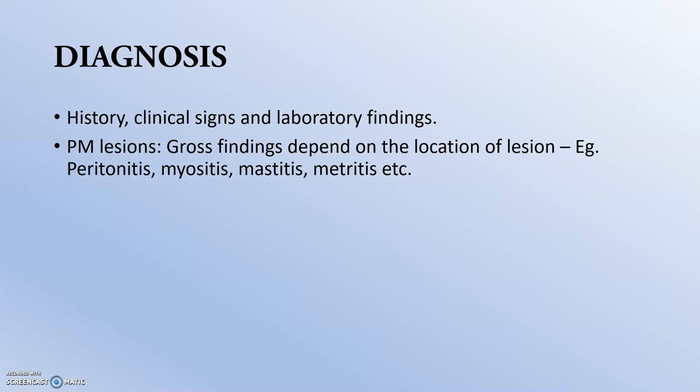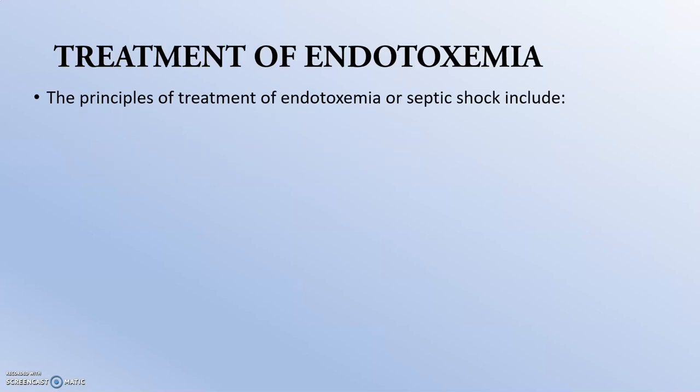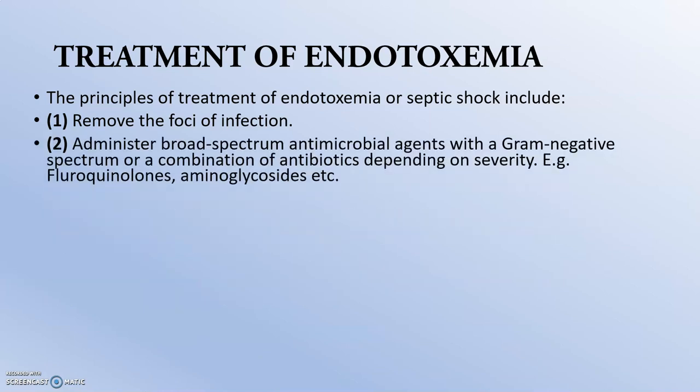Diagnosis is made mainly from history, clinical signs, laboratory findings, and post-mortem lesions. Regarding treatment of endotoxemia — the first principle is to remove the foci of infection and the causative agent. Next is administration of broad-spectrum antimicrobial agents with gram-negative spectrum, or a combination of antibiotics depending on severity — mainly fluoroquinolones and aminoglycosides.